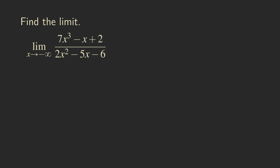Hello everyone, this is Wilson. Let's look at another limit problem — this is also a limit at infinity, where x is approaching negative infinity and we want to see what this function is approaching. I've done a few videos with similar-looking functions. They're all rational functions with x approaching infinity, and I want to show different situations and how the degrees of the numerator and denominator can affect the result.